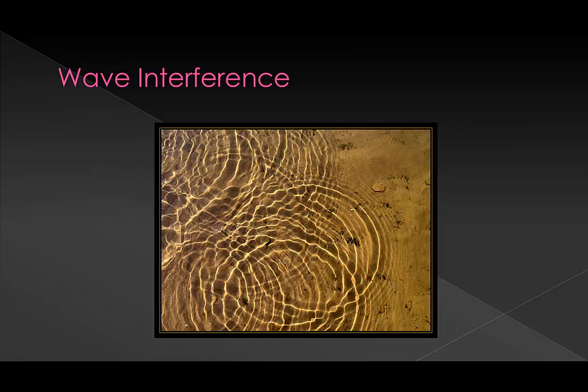Remember our discussion of wave interference in the last video. If not, you should definitely go watch it now. As a brief summary, waves can interfere destructively and constructively depending on how their phases interact. When we combine our atomic wave functions to make molecular orbitals, we will get bonding and anti-bonding orbitals depending on how these wave functions interact.